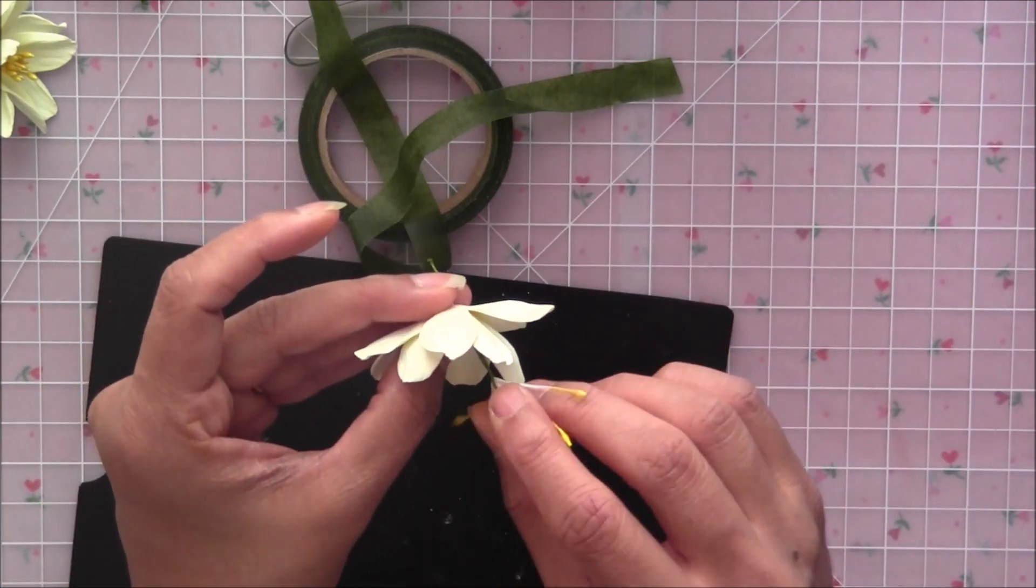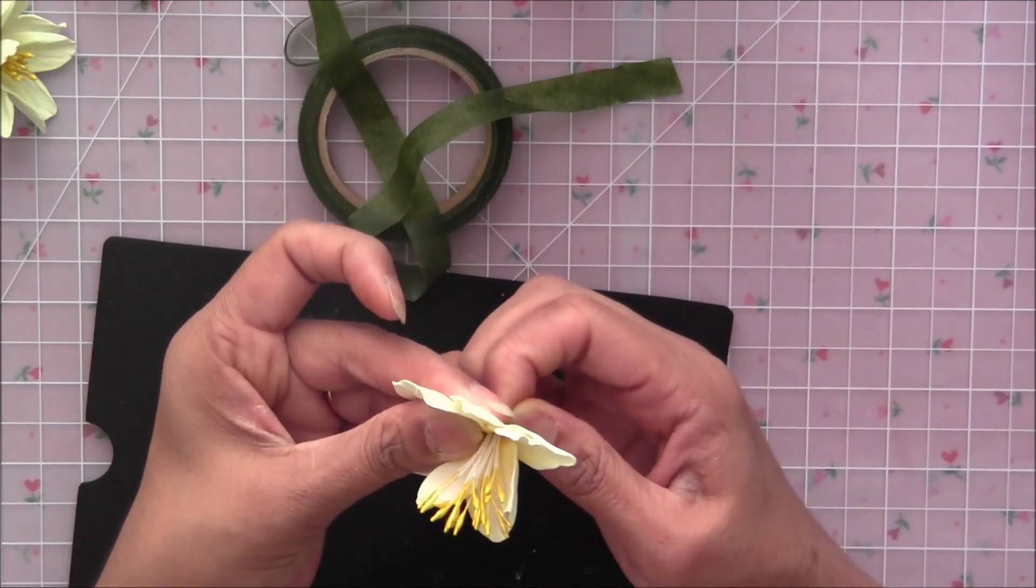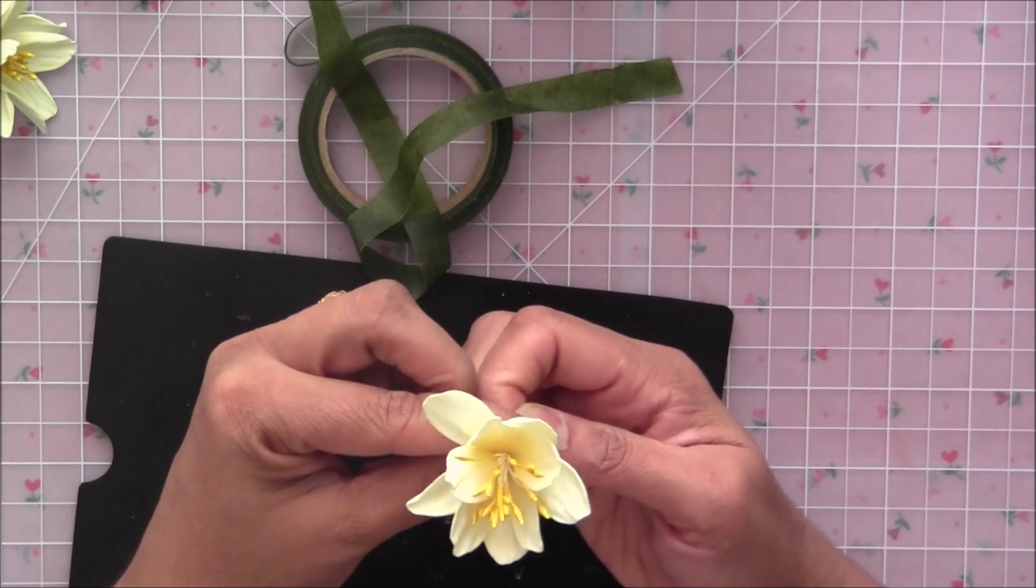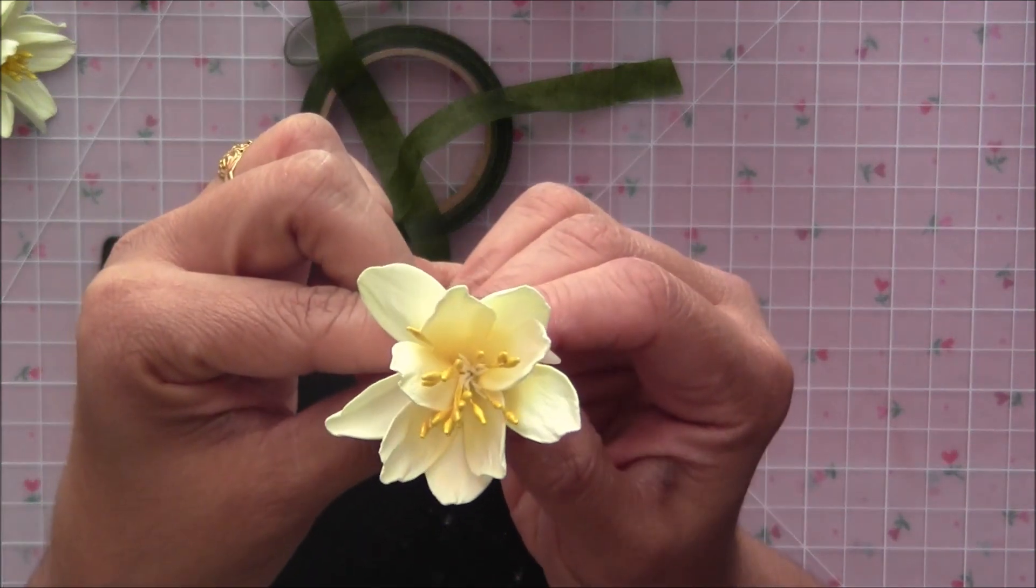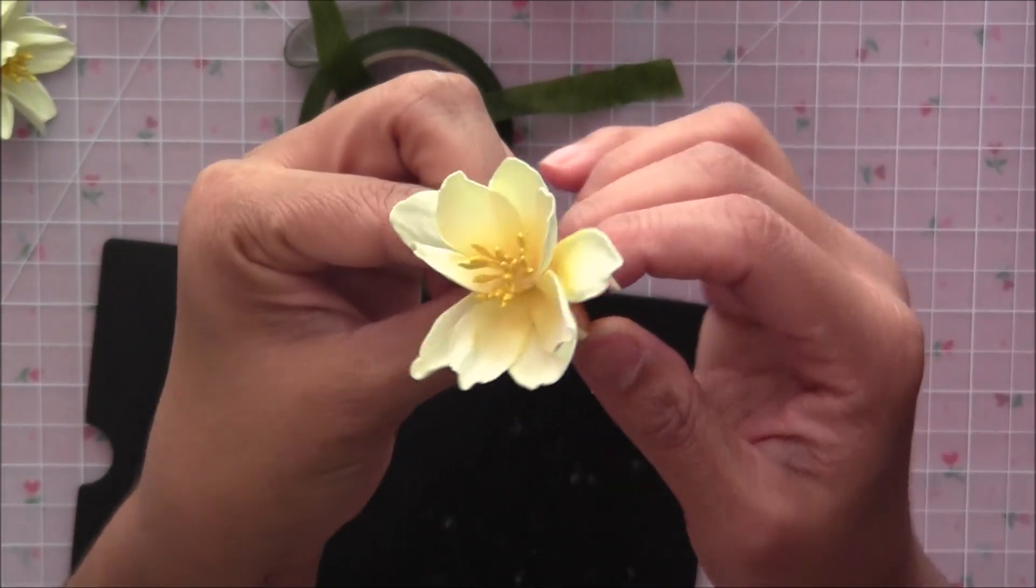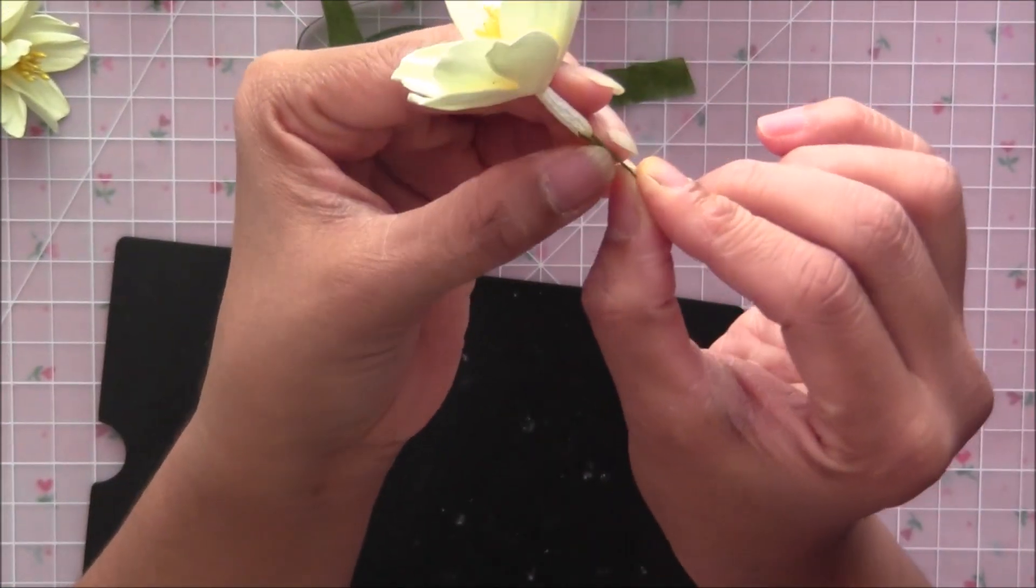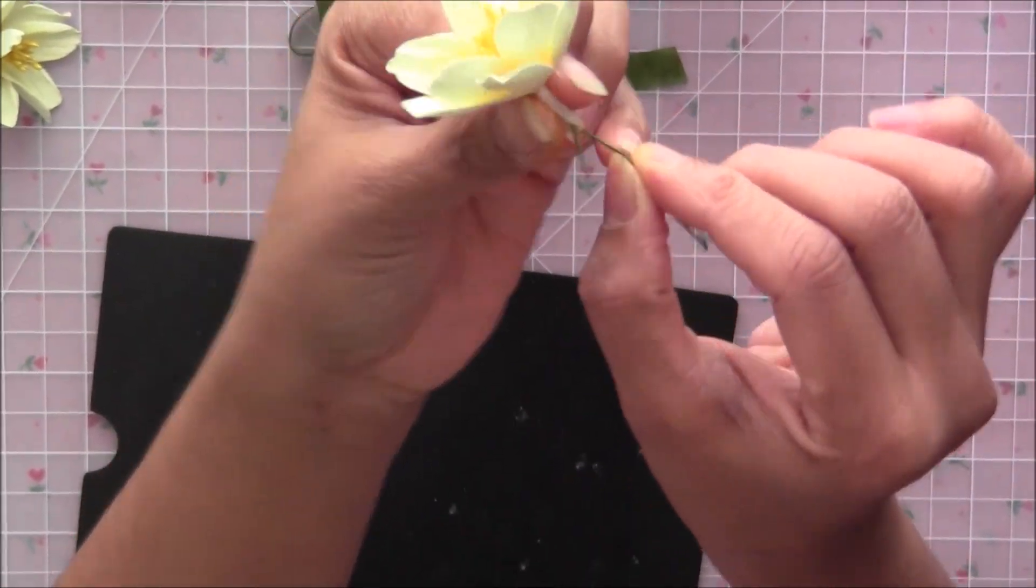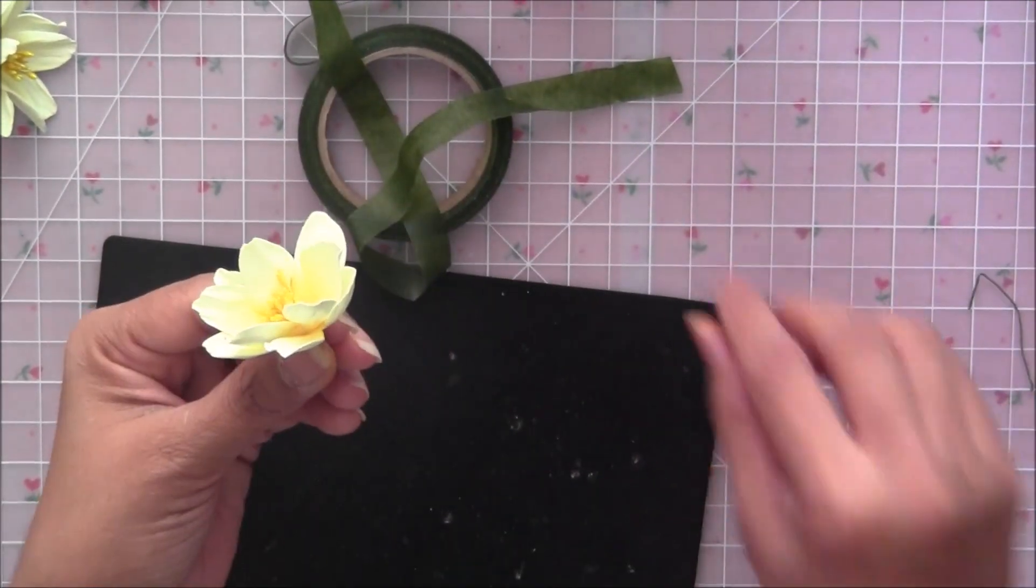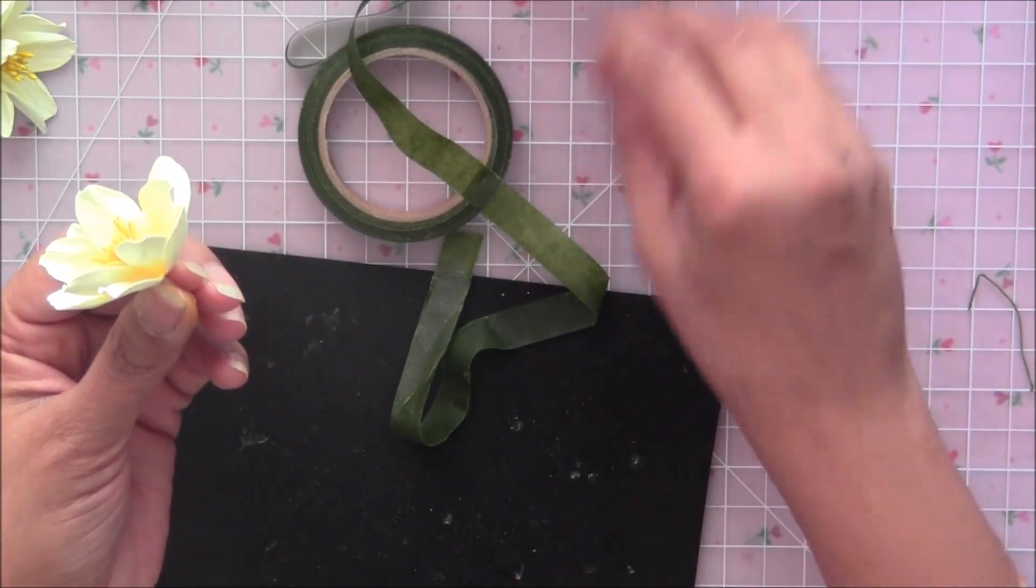So just get these stamens in however you want. Like you want fully in, just push it in. You want some out like this, you can just do it. So and then take out this loop wire off and use your floral tape.